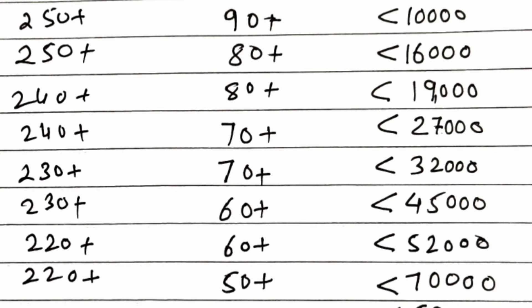With 70 plus marks and 240 plus in boards, you can expect rank under 27,000. And same 70 plus marks for 230 plus marks, you can expect 32,000. With 60 plus marks and 230 plus marks, you can expect rank under 45,000. Same 60 marks but board marks less, which is 220 plus, 52,000. And 50 plus marks and 220 plus combination will give you 70,000 ranks, under 70,000 ranks.